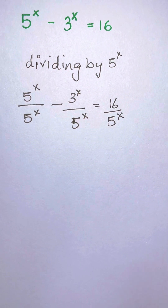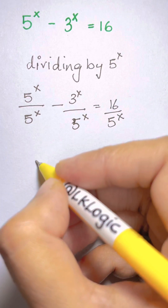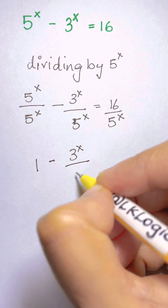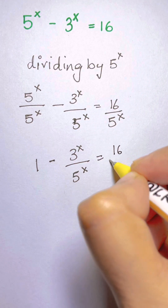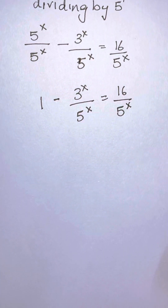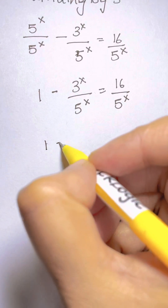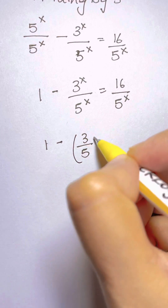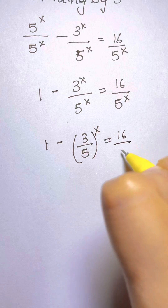Now here 5^x over 5^x is 1, so we have 1 minus 3^x over 5^x equals 16 over 5^x. And 3^x over 5^x can be written as (3/5) to the power of x. So we get 1 minus (3/5)^x equals 16 over 5^x.